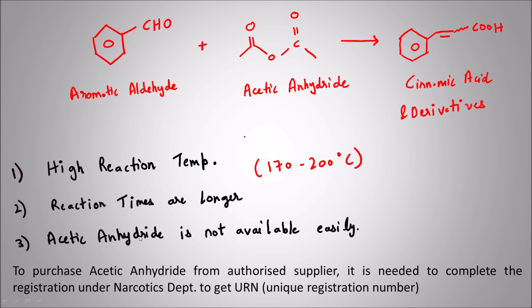These are simple reactions and they should be done in a shorter span of time. The third disadvantage — specifically talking about India — is that acetic anhydride is not easily available. To purchase acetic anhydride you have to contact the authorized supplier, and it is needed to complete a registration under the narcotics department to get a unique registration number. Only then can you order acetic anhydride.